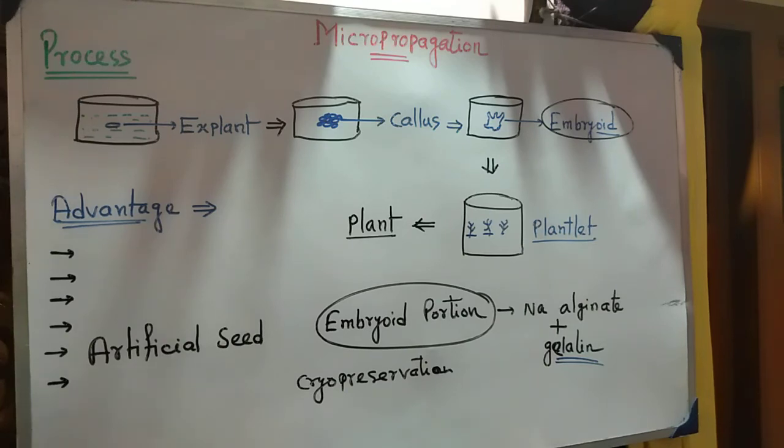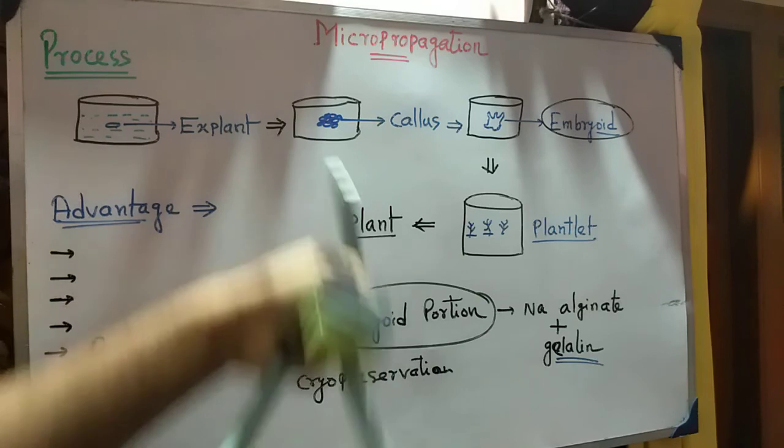It is used for medicinal plants. Micro-propagation is very good because at one time you can produce many plants. The facility needed, the steps involved, make this process very useful.